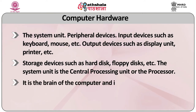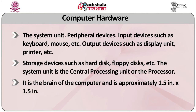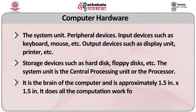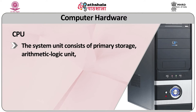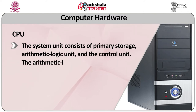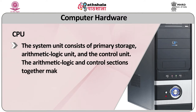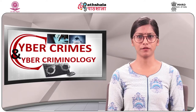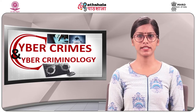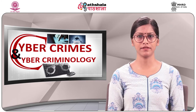The system unit is the central processing unit or processor — it is the brain of the computer, approximately 1.5 inches by 1.5 inches, and does all the computation work. The system unit consists of primary storage, arithmetic logic unit, and the control unit. Together these make up the CPU. The box contains the power supply, storage devices, hard disk and floppy drives, and the motherboard containing the CPU and memory.